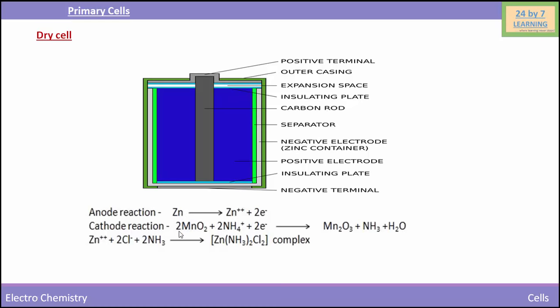At the cathode, manganese is reduced and ammonia is formed at the cathode. But it is not liberated as a gas. It combines with zinc ions forming a complex having the formula [Zn(NH3)4]Cl2. So students, this is all about dry cell.